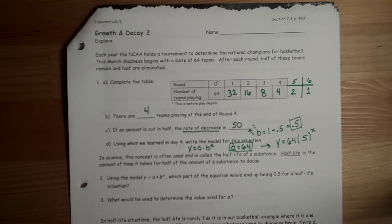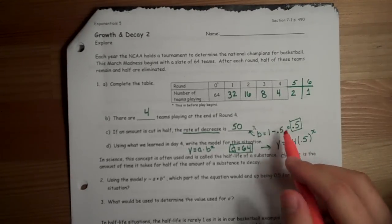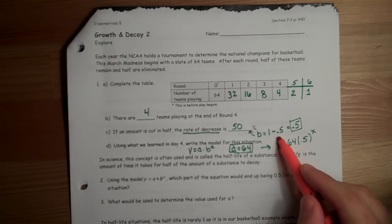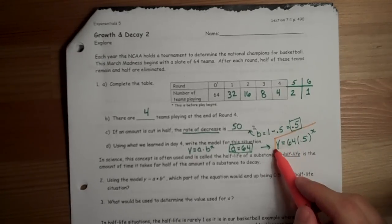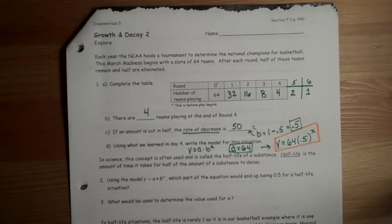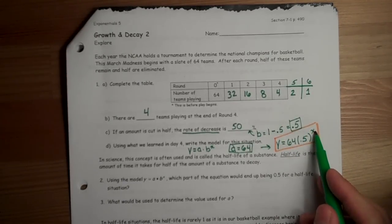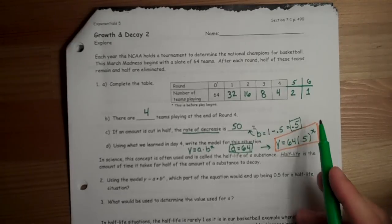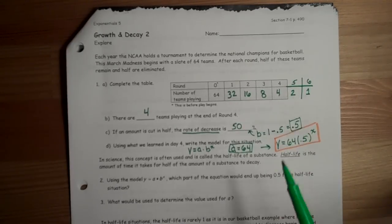And that right there would be an equation that we could use to figure out how many teams are left after any given round, without having to look up in the table. So if I wanted to double check how we did in the table, we could simply substitute the value 5 in for x, calculate all that with our calculator, and see that it should hopefully work out to be 2.